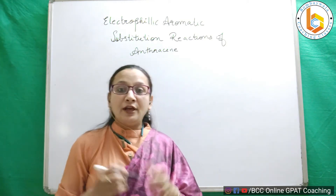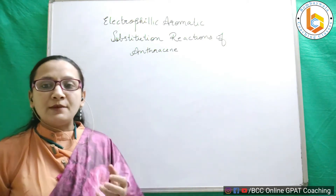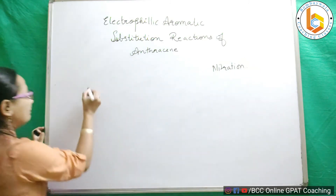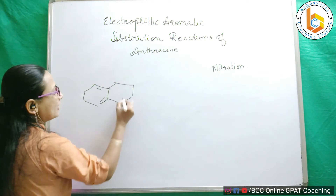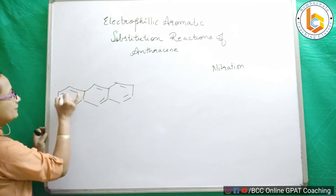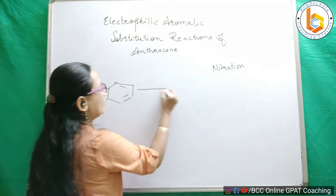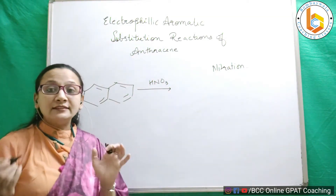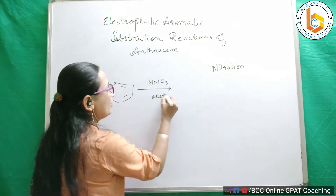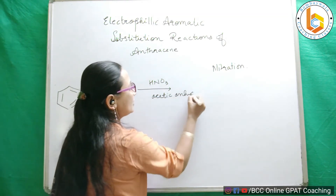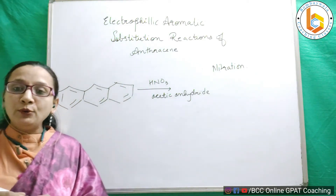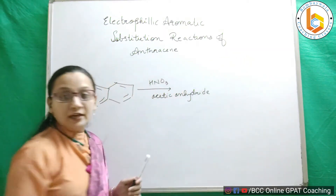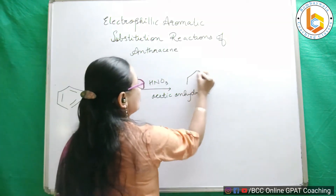Let us talk about the electrophilic aromatic substitution reactions of anthracene. The first reaction is nitration, just as we discussed for benzene. This is anthracene. Suppose I use nitric acid (HNO₃) in the presence of acetic anhydride. I am not taking a very concentrated reagent as I did for benzene, because we know that these polynuclear aromatic compounds are much more reactive. We already know that electrophilic aromatic substitution will occur at positions 9 and 10.